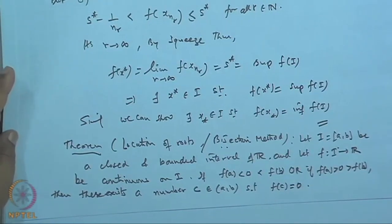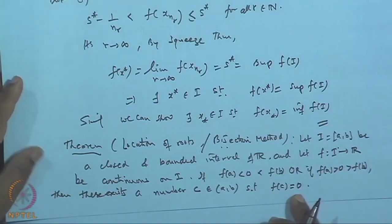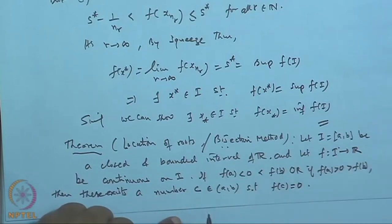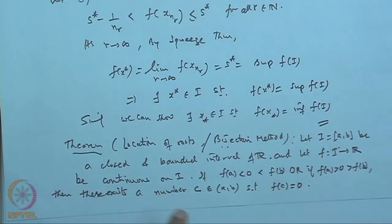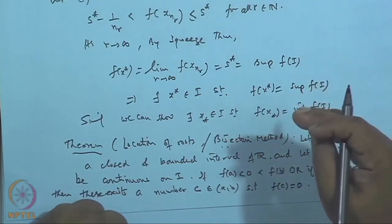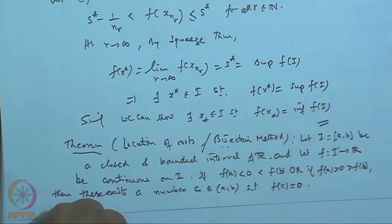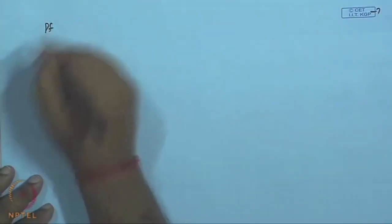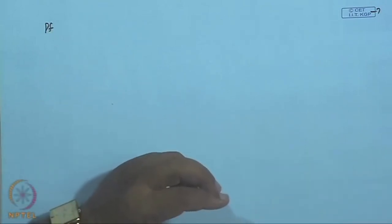This shows we can identify a root of the function when f is defined on a closed interval [a, b] with alternating signs at the endpoints. Since f is continuous, its graph is a continuous curve. If part of the graph is below the x-axis and part is above, the curve must cross the x-axis at some point c — and that crossing point is where f(c) = 0.